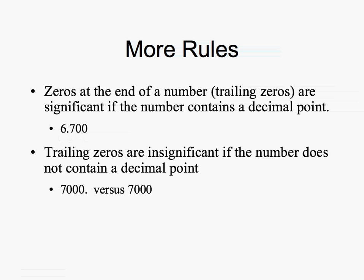Trailing zeros are insignificant if the number does not contain a decimal point. So 7,000 with a decimal point makes those three zeros significant, giving four significant figures. However, 7,000 without a decimal point makes those three zeros insignificant, giving only one significant figure.